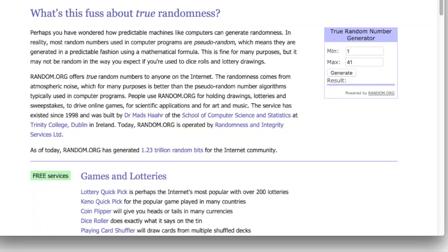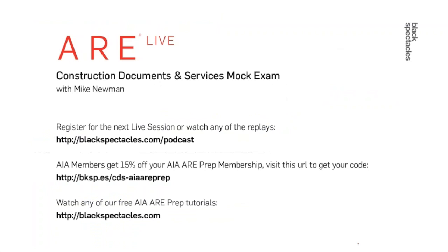For AIA members, visit the URL bksp.es/CDS-AIA-ARE-prep to get a 15% discount for the entire duration of your AIA ARE prep membership. Two participants — Steven and Ken — got everything right on the submitted PDF answers and have been messaged a link to claim their free t-shirt. Well done!